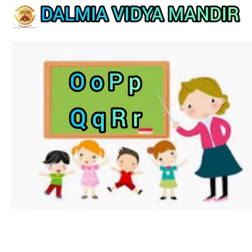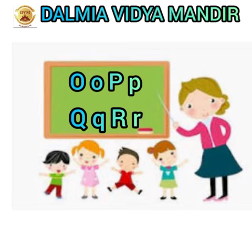Come on, let's all learn. What are they? O, P, Q and R. Yes children, now we are going to learn these letters — how to write, the phonic sounds of the letters, and the objects that start from these letters. Come on, let's all learn the alphabets.